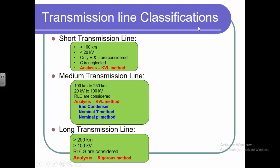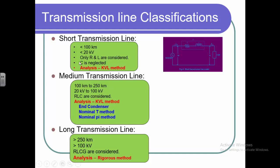We can classify the transmission line into three categories depending upon the distance and the voltage level. The first one is a short transmission line, the second is medium transmission line, and the third is long transmission line. For short transmission lines, the span is less than 100 kilometers and the voltage is less than 20 kV. In this short transmission line we are only considering resistance and inductance. Capacitance is neglected because the capacitive reactance is so small compared to the inductive reactance.